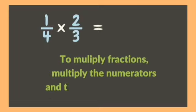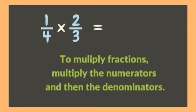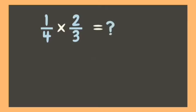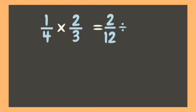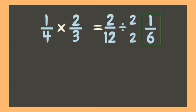You just need to simply multiply the numerators and denominators. One times two is two, four times three is twelve. Now let us simplify our answer. The common factor of two and twelve is two. Two divided by two is one, twelve divided by two is six. Therefore our final answer is one-sixth.